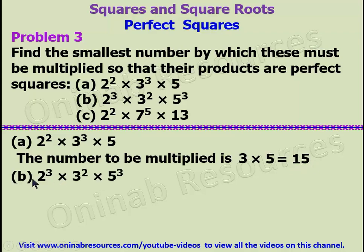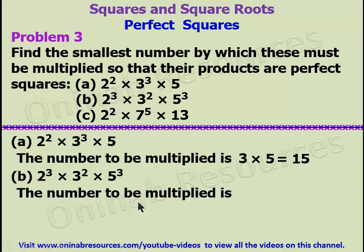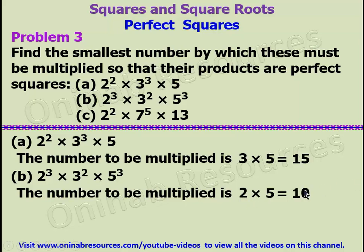For part b: the power of 2 is not even, so we need 2. The power of 3 is even, so we don't need 3. The power of 5 is odd, so we need 5. Therefore, the number to be multiplied is 2 times 5, which gives 10.